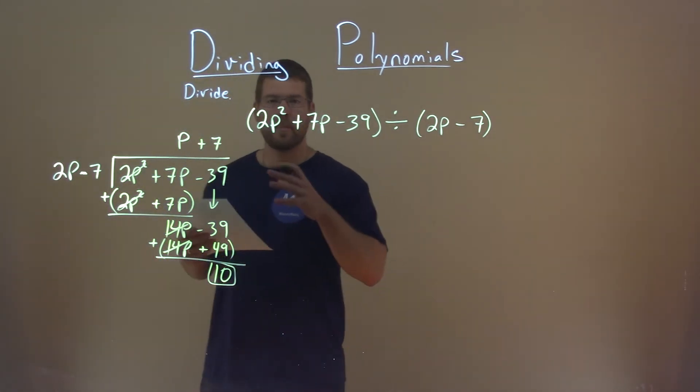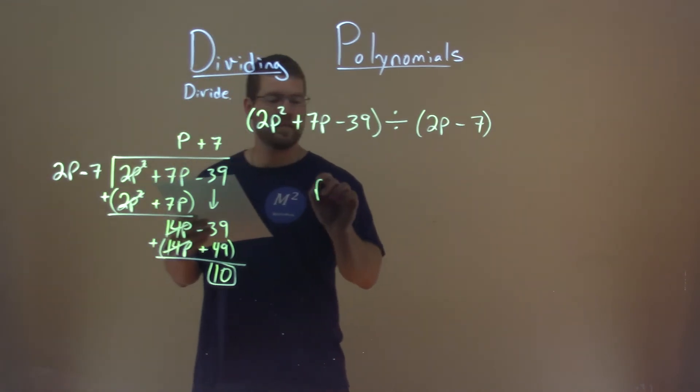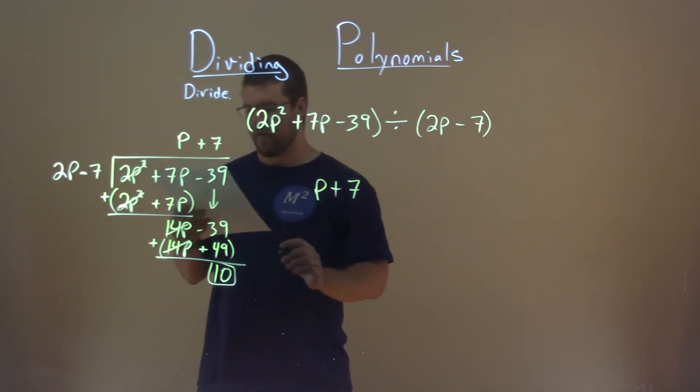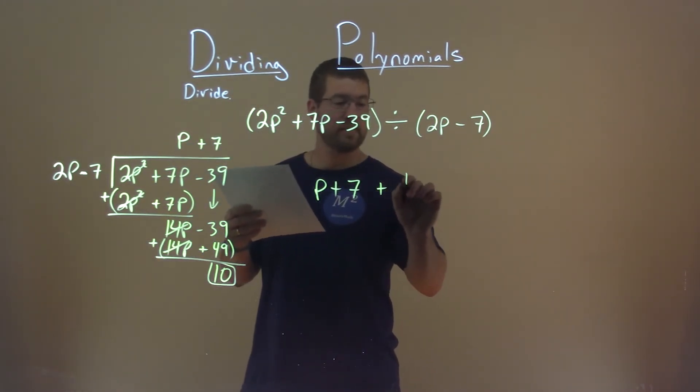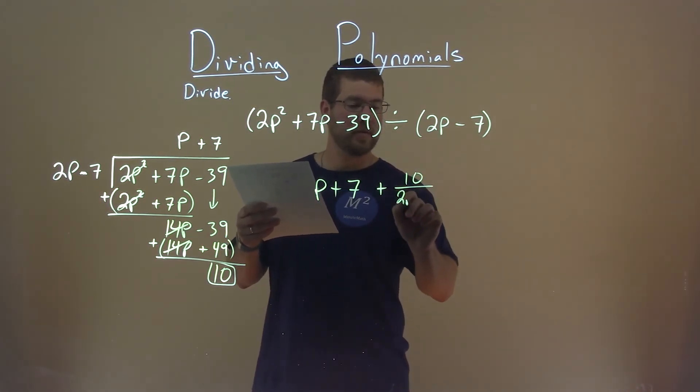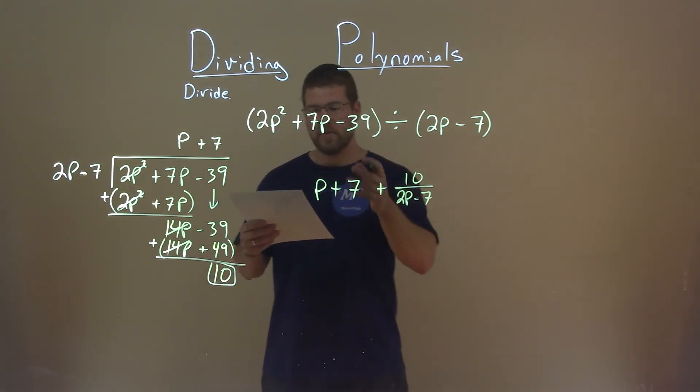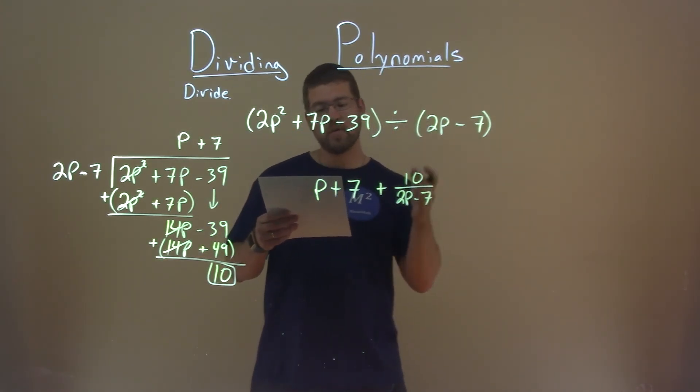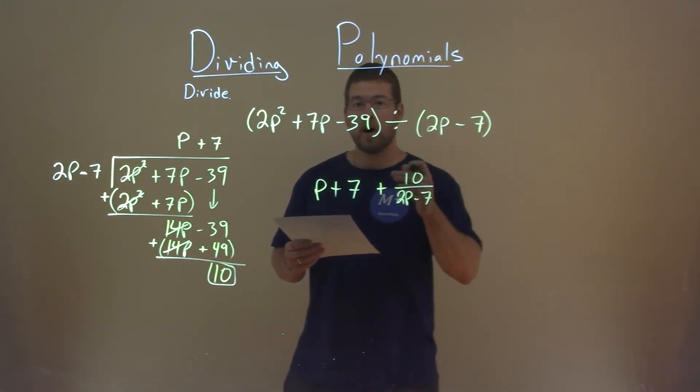So, now let's bring to our final answer here. Bring what we had divided by, which is 2p minus 7, and there we have it. p plus 7 plus 10 over 2p minus 7 is our final answer.